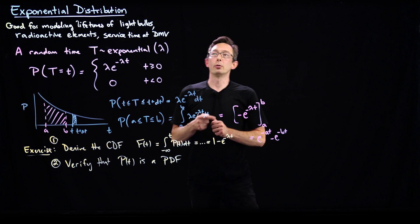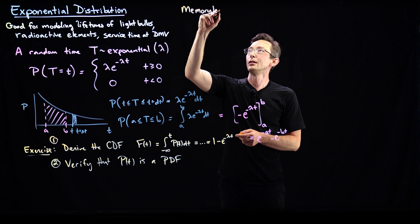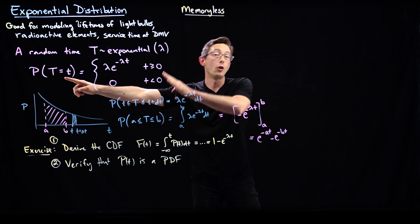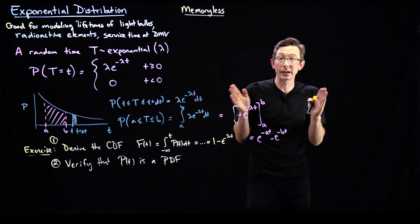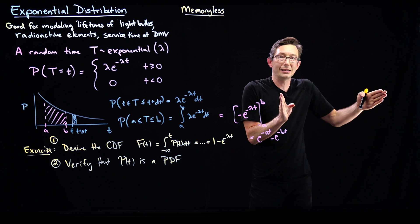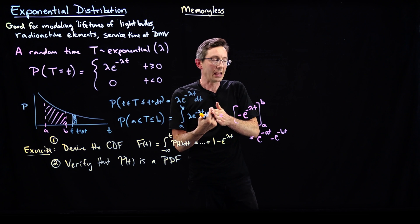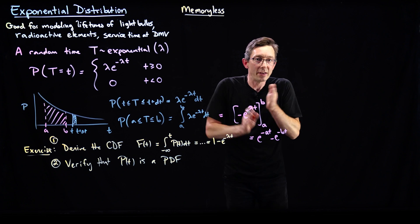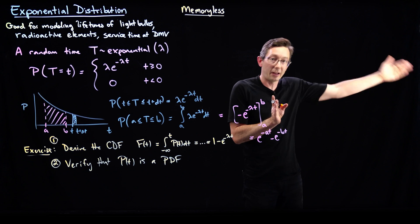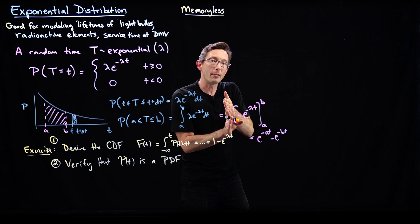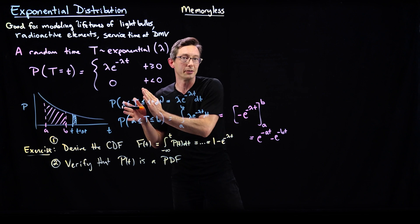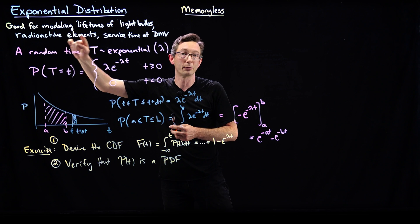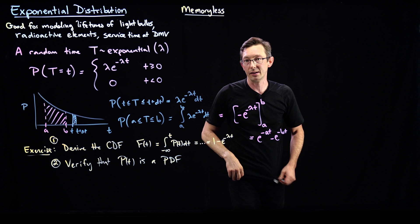The most important property we're going to talk about is the memoryless property. Essentially, if time s has already elapsed, then the probability of failure after time s is the same as this probability. If my light bulb has an expected lifetime of a thousand hours, but a thousand hours has already passed, then the new expected lifetime from that starting point is still a thousand hours. That's a wild property called the memoryless property of exponential distributions, and it's really profound — especially important in radioactive decay.